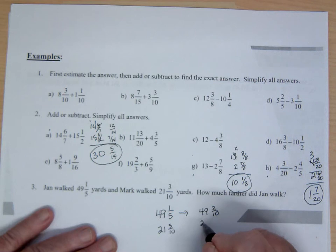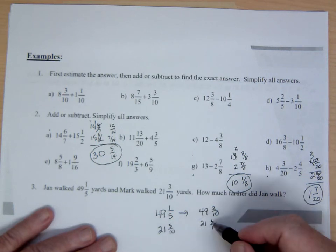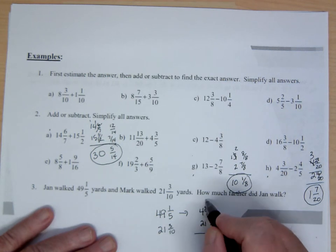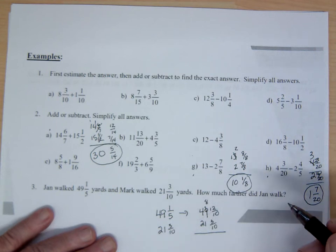Now we will get common denominators. We're subtracting. The common denominator is 10. So this will be 49 and 2 over 10 and this will be 21 and 3 over 10.